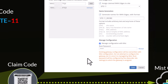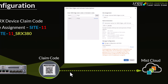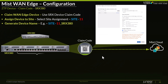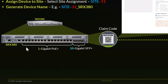Once you click on 'Claim', it will communicate with the MIST cloud, and the device will be assigned and ZTP'd to the site. Looking at the SRX 380, we have two sets of ports: there are 1-gigabit Ethernet ports (PoE+), and we also have 10-gigabit Ethernet SFP+ ports. I want to show you both ways to use either the 1-gigabit Ethernet ports as your WAN links — WAN 1.0 and 1.1.